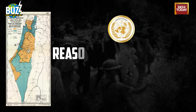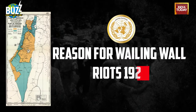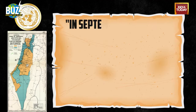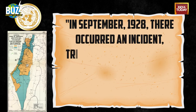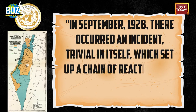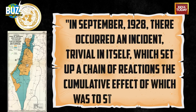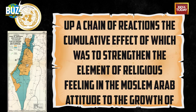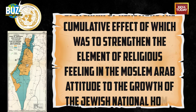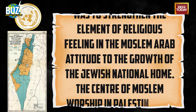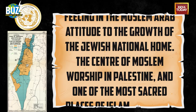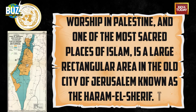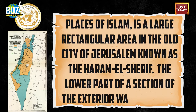Let's first talk about the Wailing Wall Riots. According to UN documents, the riots are described as thus: In September 1928, there occurred an incident, trivial in itself, which set up a chain of reactions whose cumulative effect was to strengthen the element of religious feeling in the Muslim Arab attitude to the growth of the Jewish national home. The center of Muslim worship in Palestine, and one of the most sacred places of Islam, is a large rectangular area in the old city of Jerusalem known as the Haram-el-Sharif.